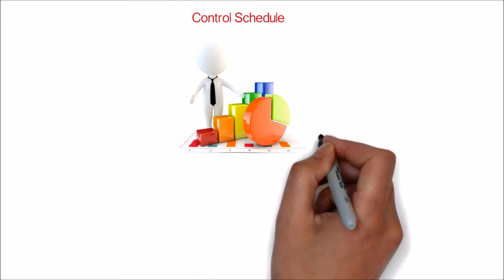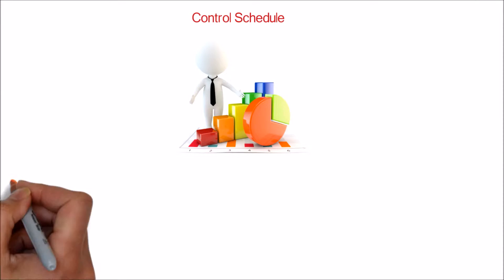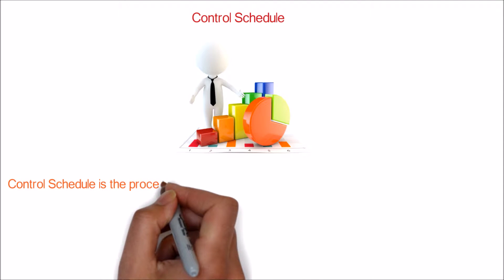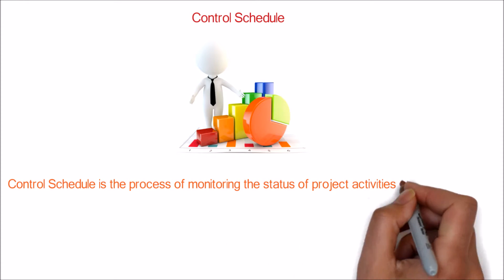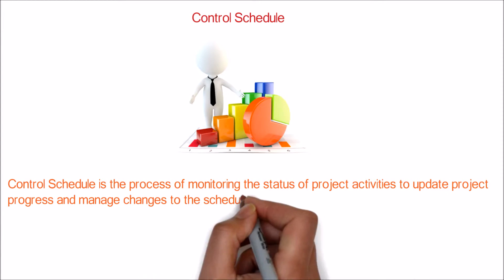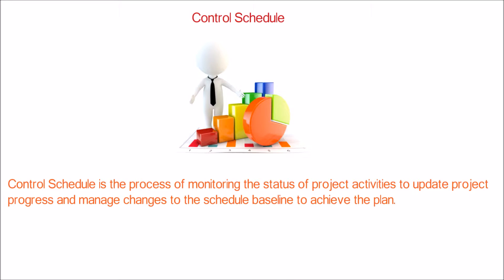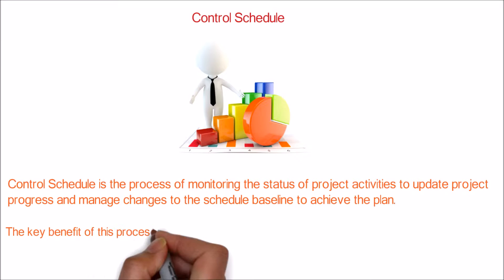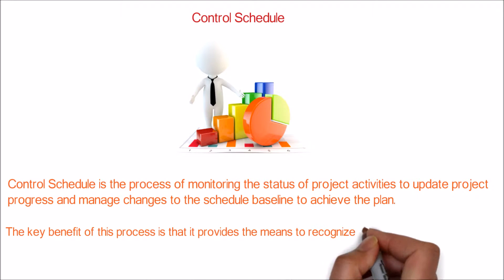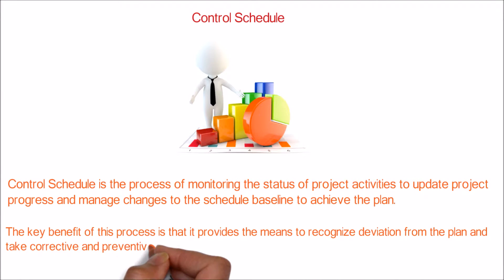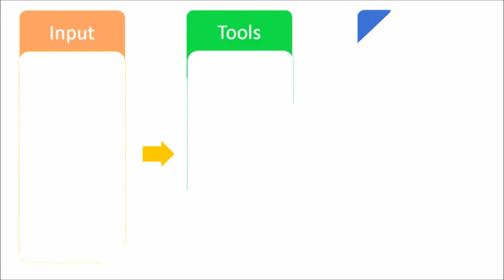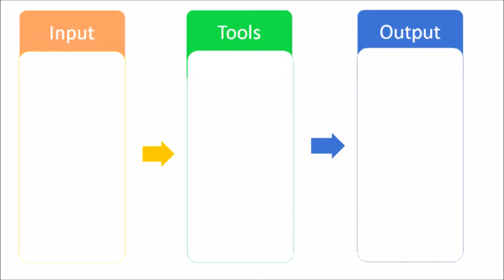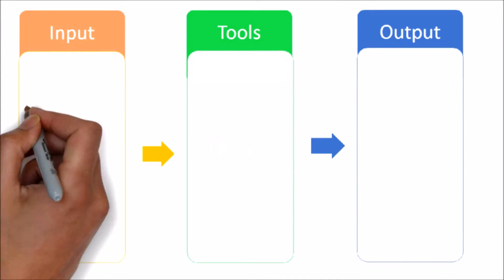Let's learn about the process of Control Schedule. Control Schedule is the process of monitoring the status of project activities to update project progress and manage changes to the schedule baseline to achieve the plan. The key benefit of this process is that it provides the means to recognize deviation from the plan and take corrective and preventive actions, and thus minimize risk. Let's see the inputs, tools and techniques, and output of the Control Schedule process.